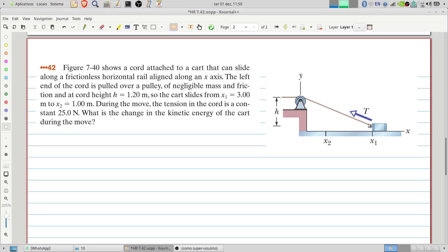The cart slides from x1 equals 3 meters to x2 equals 1 meter. During the move, the tension in the cord is a constant 25 newtons. What's the change in the kinetic energy of the cart during the move?